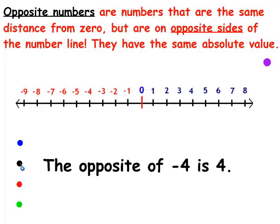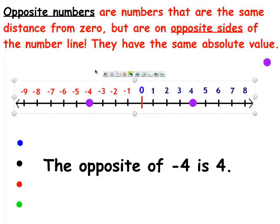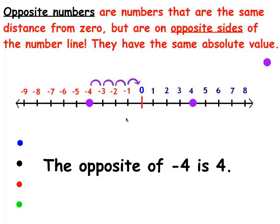The opposite of negative 4 is — you guessed it — 4. Let's put these dots on there. There's negative 4, and here's 4. They are on opposite sides of zero and their absolute value is the same. 1, 2, 3, 4 — so the absolute value of negative 4 is 4. 1, 2, 3, 4 — the absolute value of 4 is also 4. They have the same absolute value, but they're on opposite sides of zero.